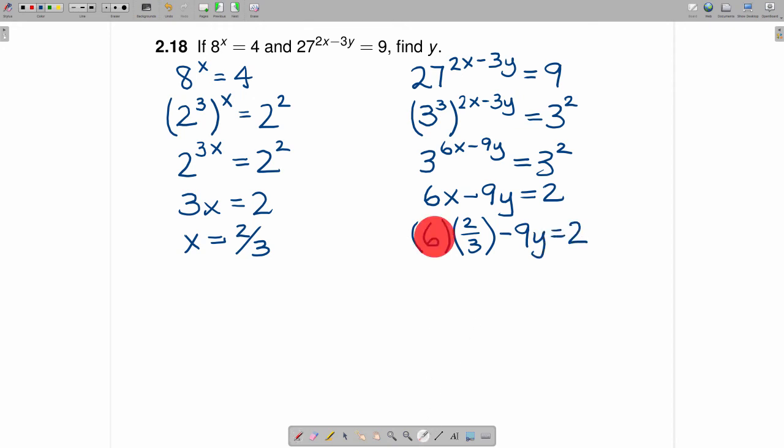When you multiply 6 times 2 thirds, that's 12 thirds, which is the same as 4 minus 9y is equal to 2.